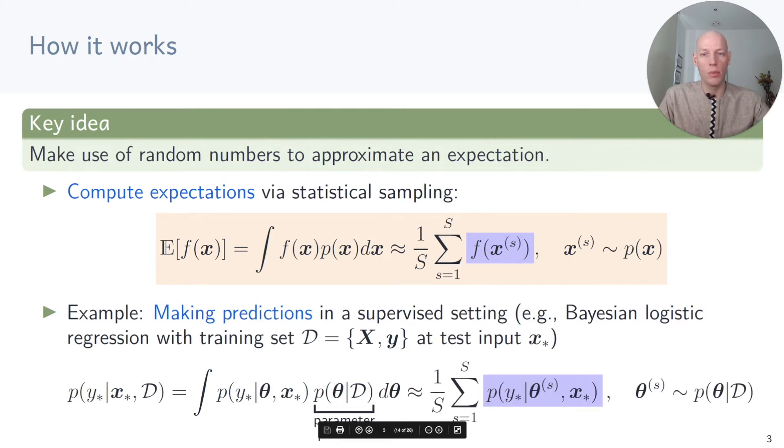Since this integral cannot be computed analytically, we can use Monte Carlo estimation where we draw model parameters from the parameter posterior and for each drawn model parameter, we make a prediction of the corresponding label. We sum them up and then divide by the number of samples. And this gives us the Monte Carlo estimator.